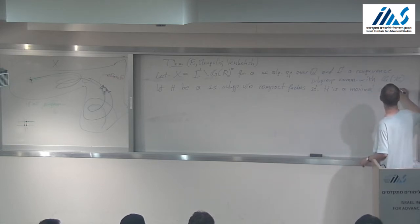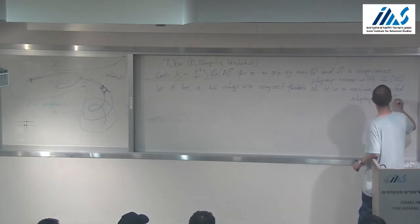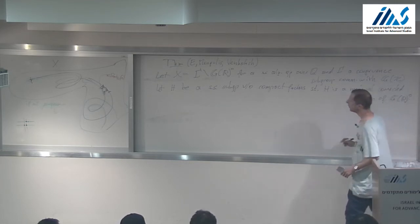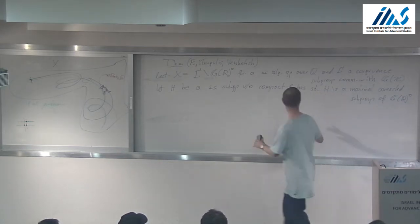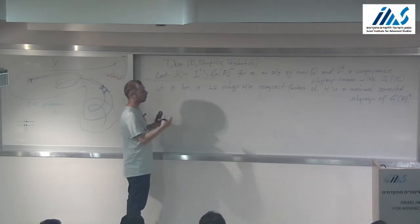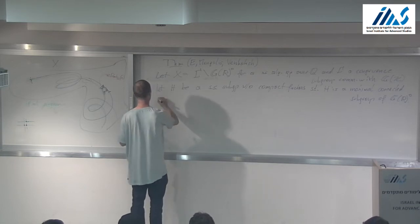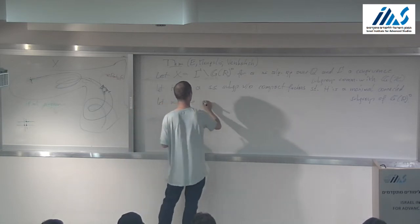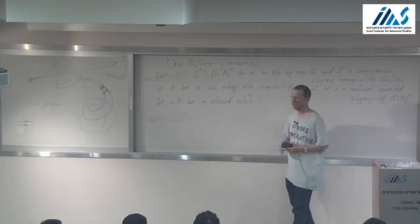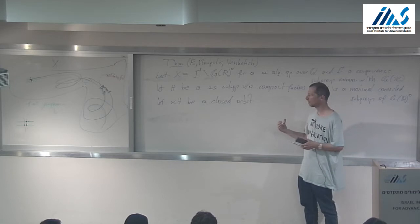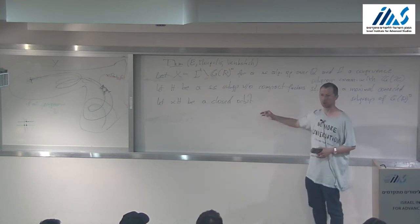Let me make it even stronger to simplify: H is a maximal connected subgroup of G(R). I'm looking at closed orbits of H. Let xH be a closed orbit. Effective means I want to say something even for an individual closed orbit. Under this maximality condition, these orbits have to equidistribute in the big space, because nothing else makes sense when you change your sequence.